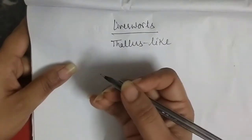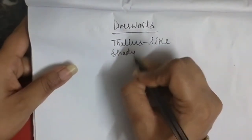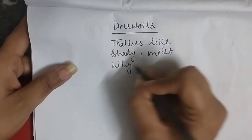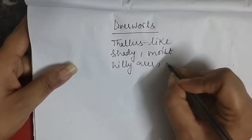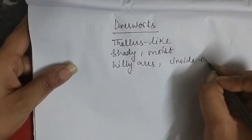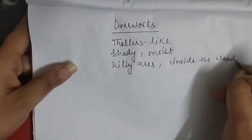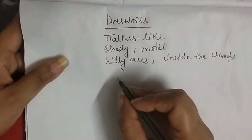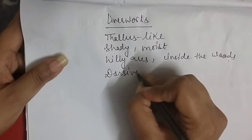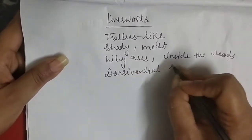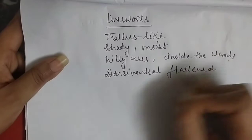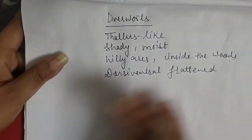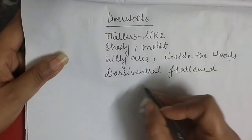The habitat is the same as all bryophytes: shady habitats, moist habitats, basically on the hilly areas, and sometimes they are also present inside the woods. The body organization is dorsiventral and flat-ended, and it feels like a leaf-like structure.